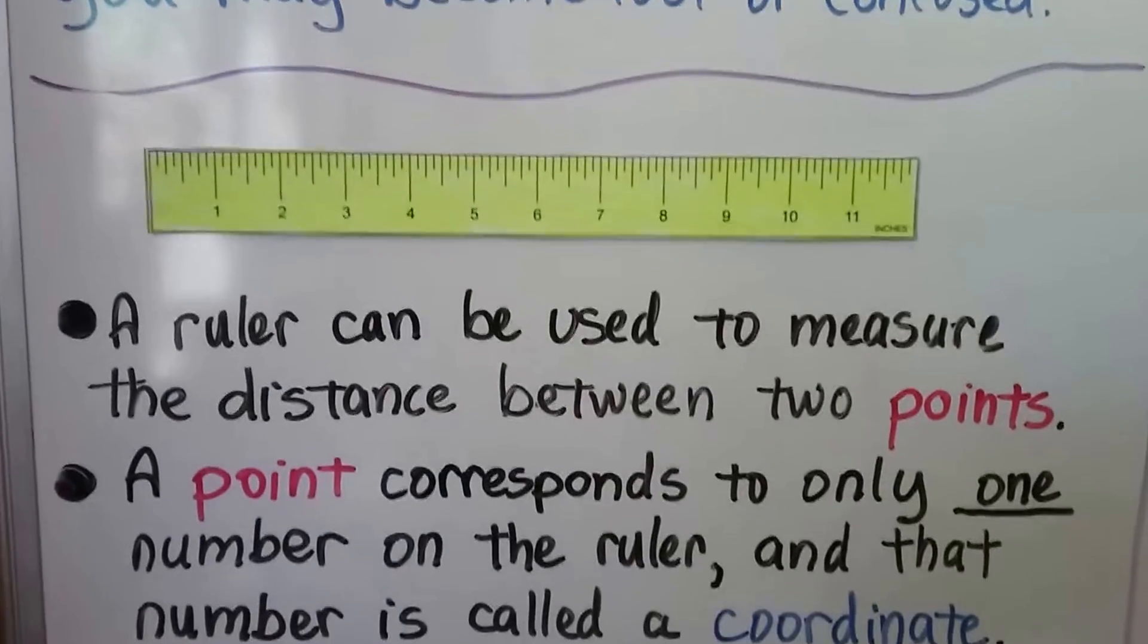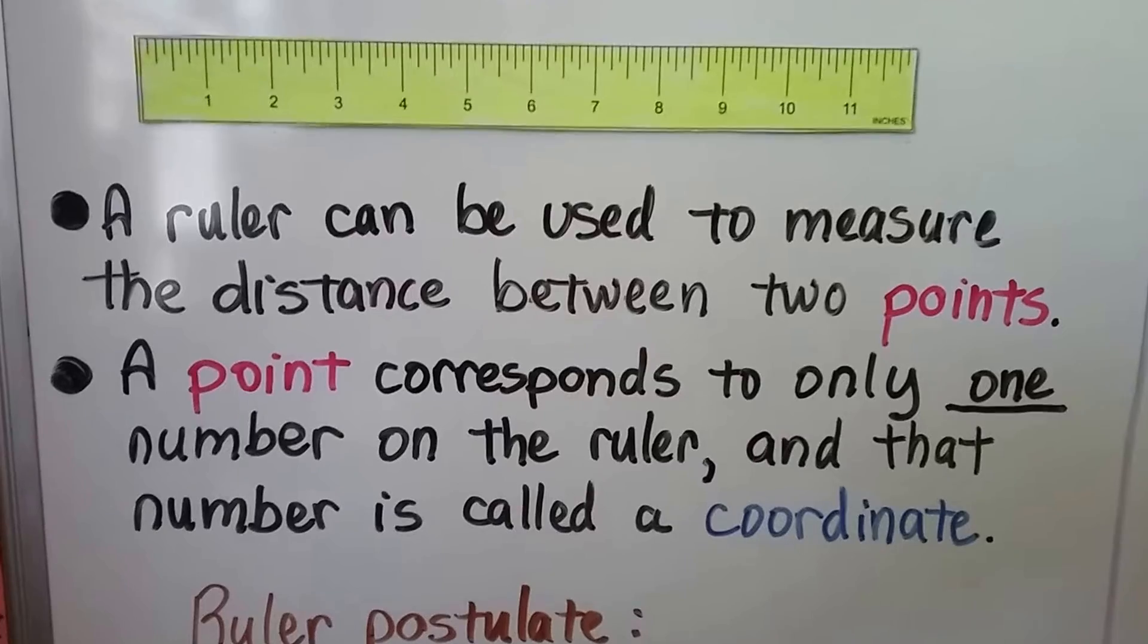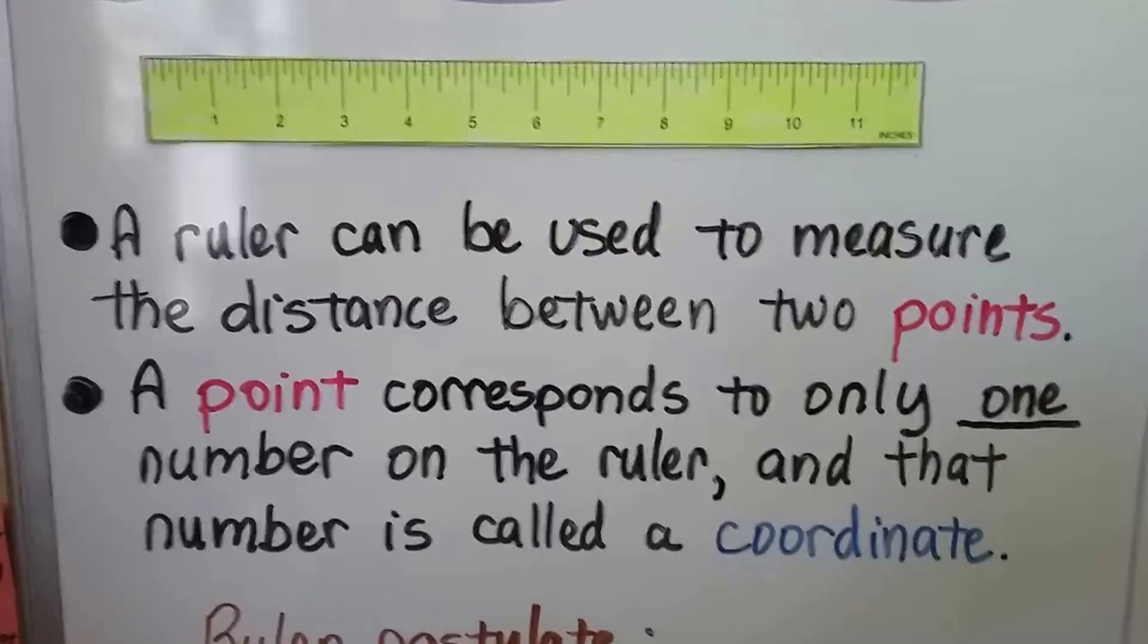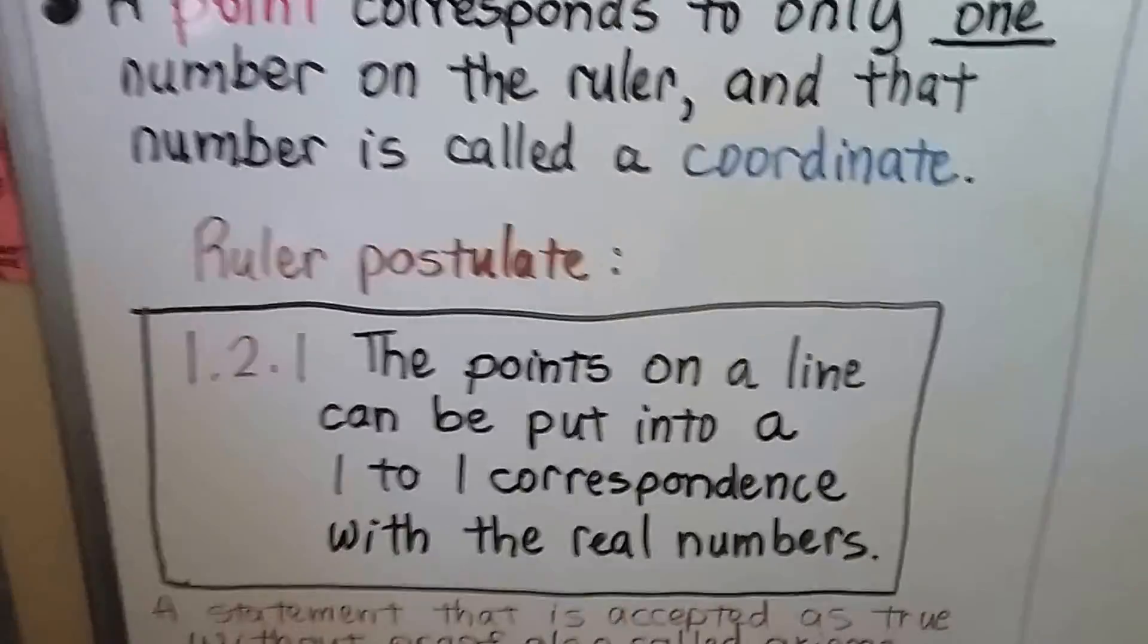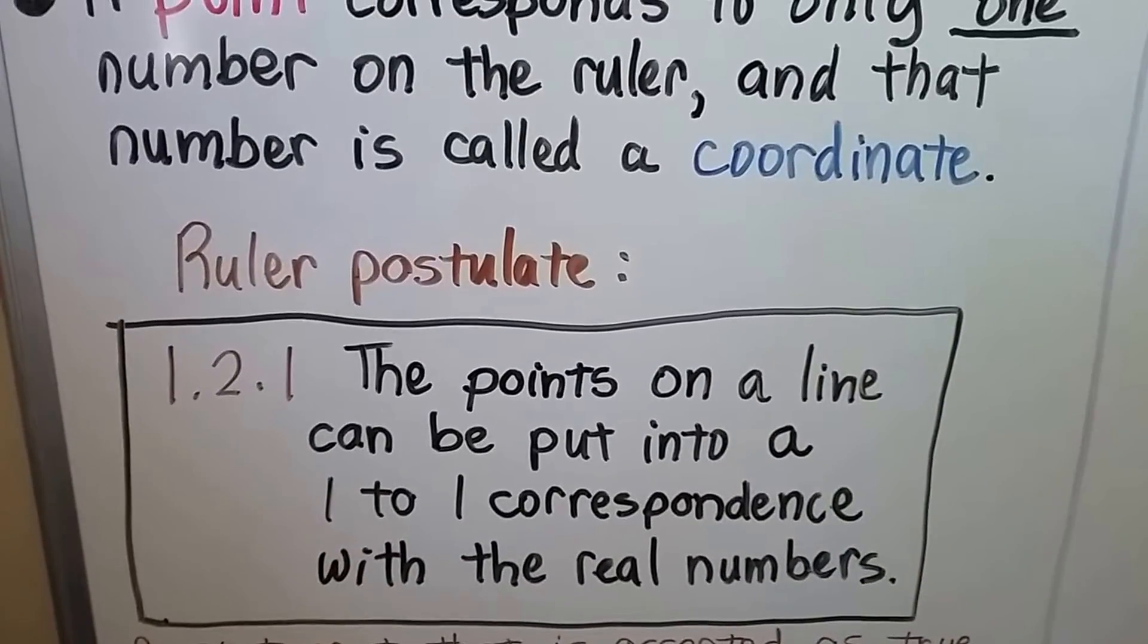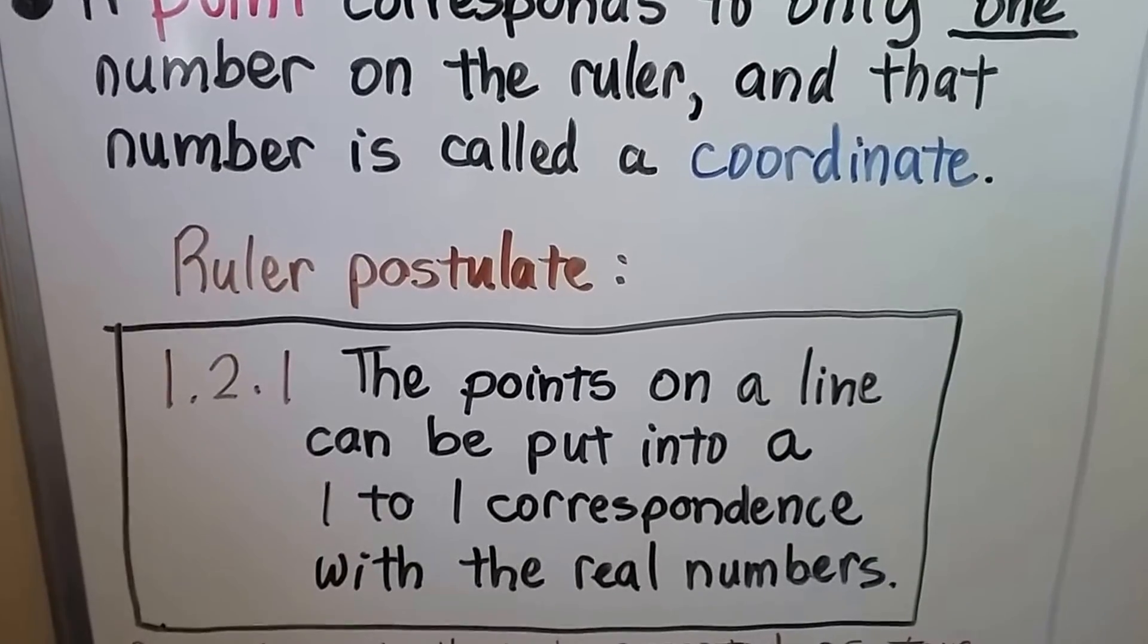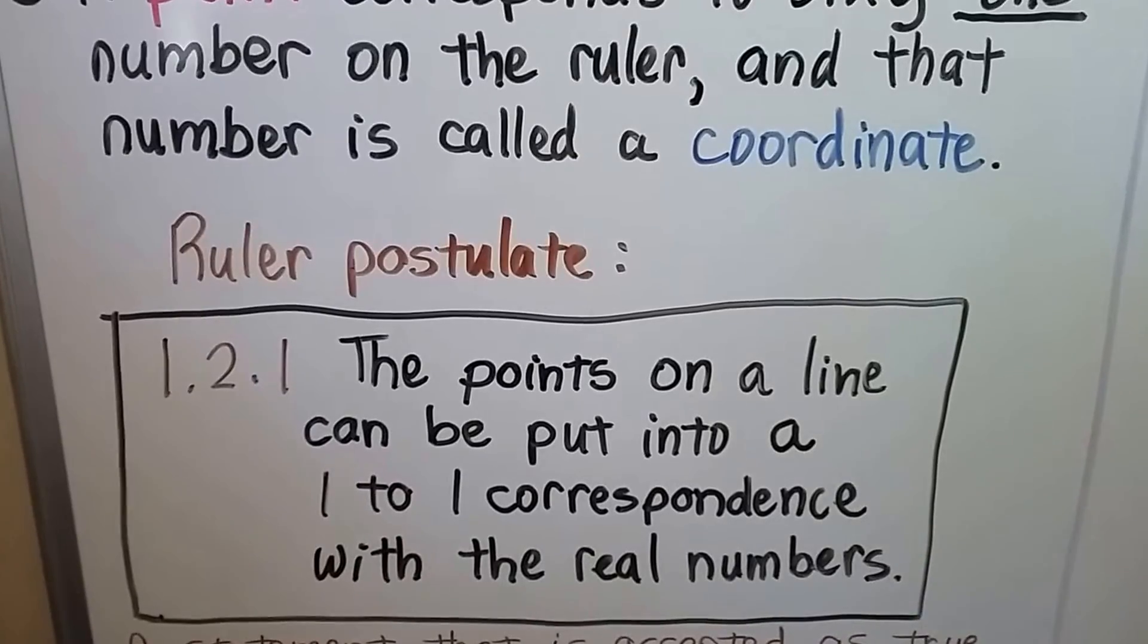A ruler can be used to measure the distance between two points. A point corresponds to only one number on the ruler, and that number is called a coordinate. So we have a ruler postulate for you. You can write this down in a folder or a spiral to keep track of all these because you're going to need them if you do proofs.